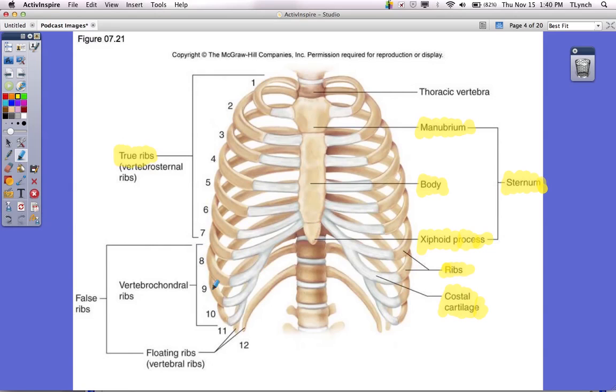Then 8, 9, 10, 11, and 12, these are your false ribs. The reason why we call them false ribs is because they're not directly attached to the sternum via the costal cartilage.